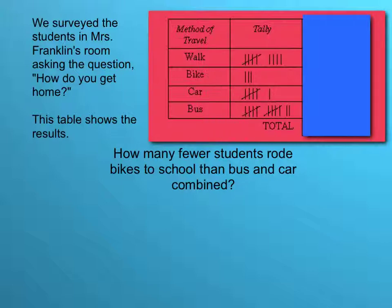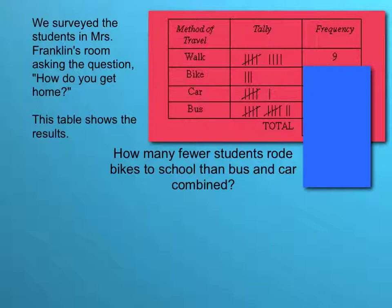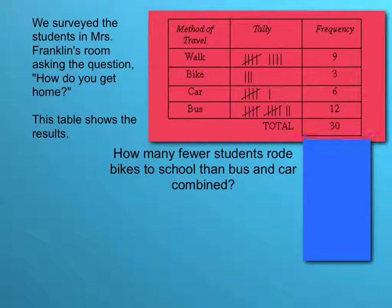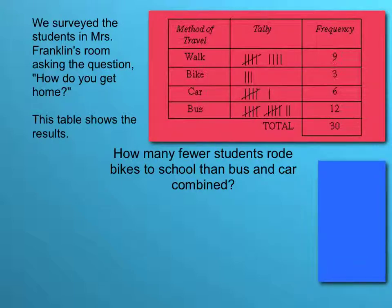We would create a frequency table to answer this question: how many fewer students rode bikes to school than bus and car combined? The number of walkers: five, six, seven, eight, nine. There are three people that chose biking, six people that chose car riding, and twelve people chose bus. So in total, thirty people voted. Each tally is one student.